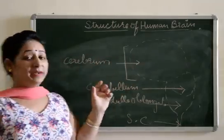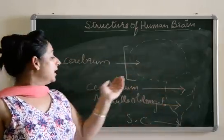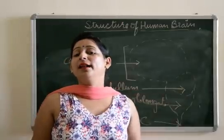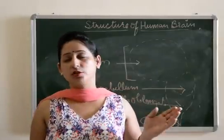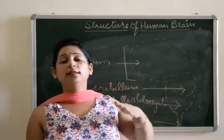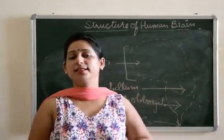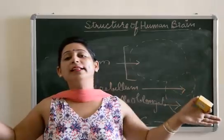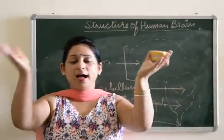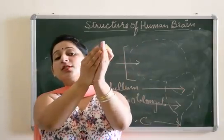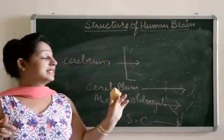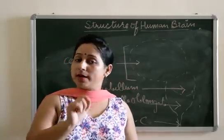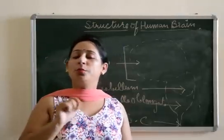Midbrain, as already mentioned, connects the forebrain to the hindbrain. Next is the hindbrain, comprising cerebellum and medulla oblongata. The cerebellum is not irregular — it does not have ridges and grooves; it is smooth. Its function is to maintain the body's balance. Our body is bilateral, meaning we can divide it into two halves, and these halves must coordinate to perform actions. That muscular coordination is maintained by the cerebellum.